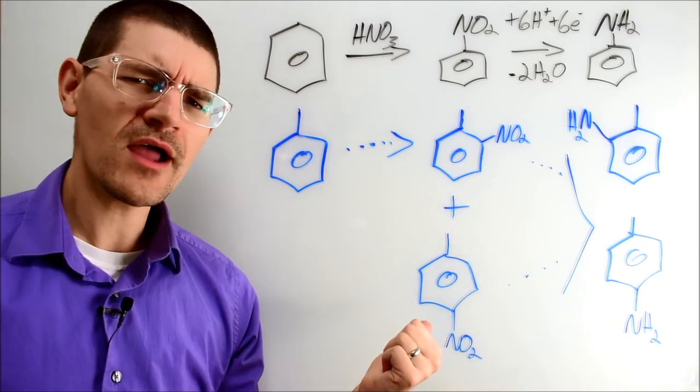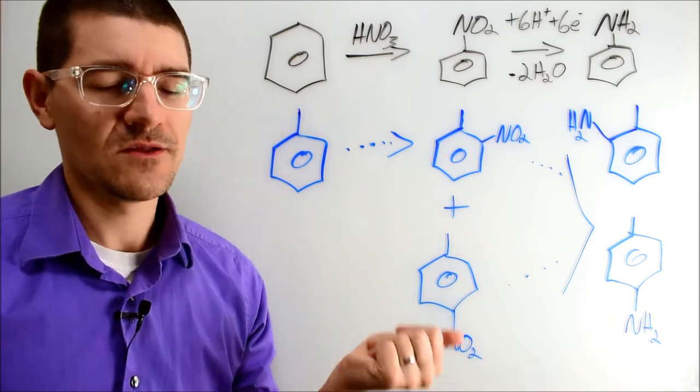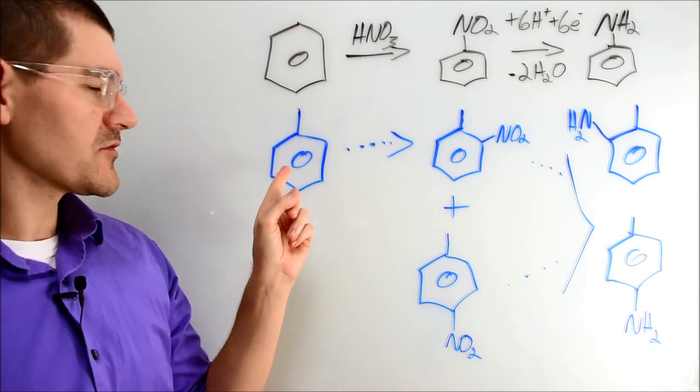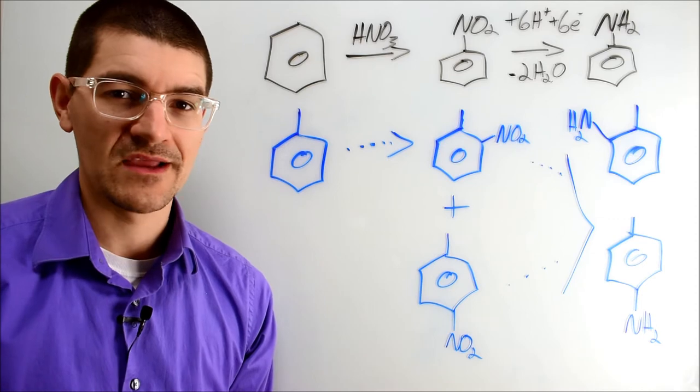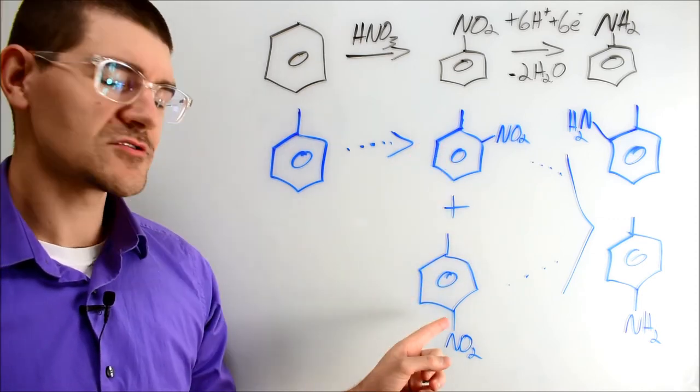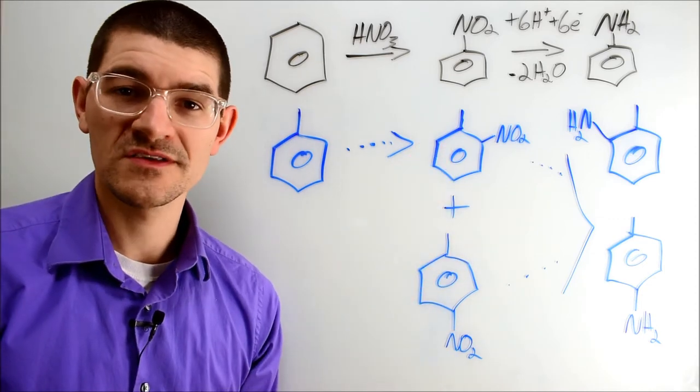But Devin, why does it direct para and ortho instead of meta? Well, another great question. Turns out this methyl group on the toluene is electron donating, so during electrophilic aromatic substitution you get resonance structures that are amenable to the ortho and the para substituents.